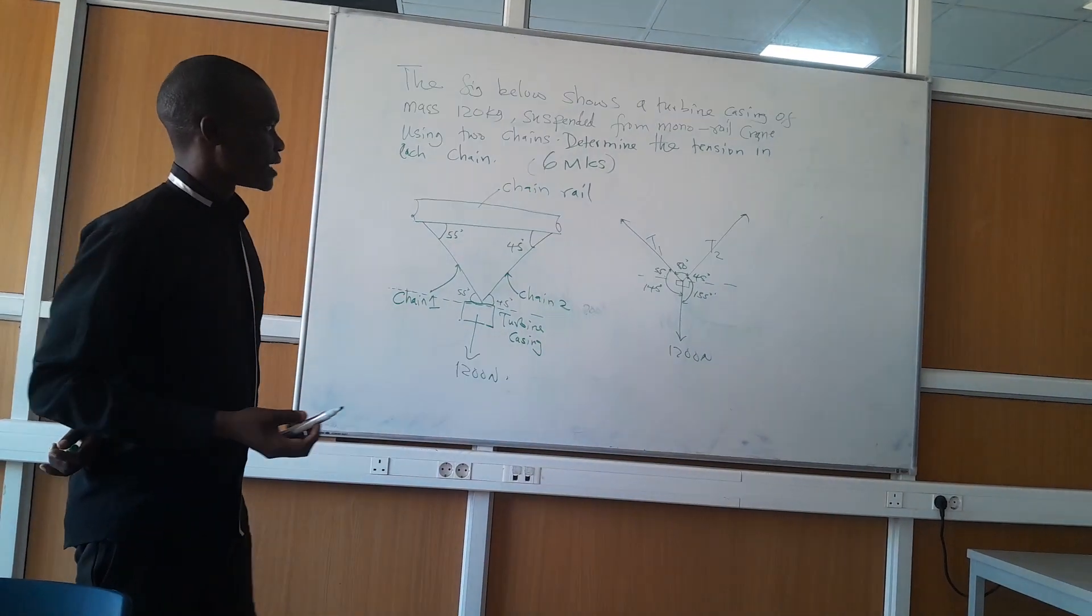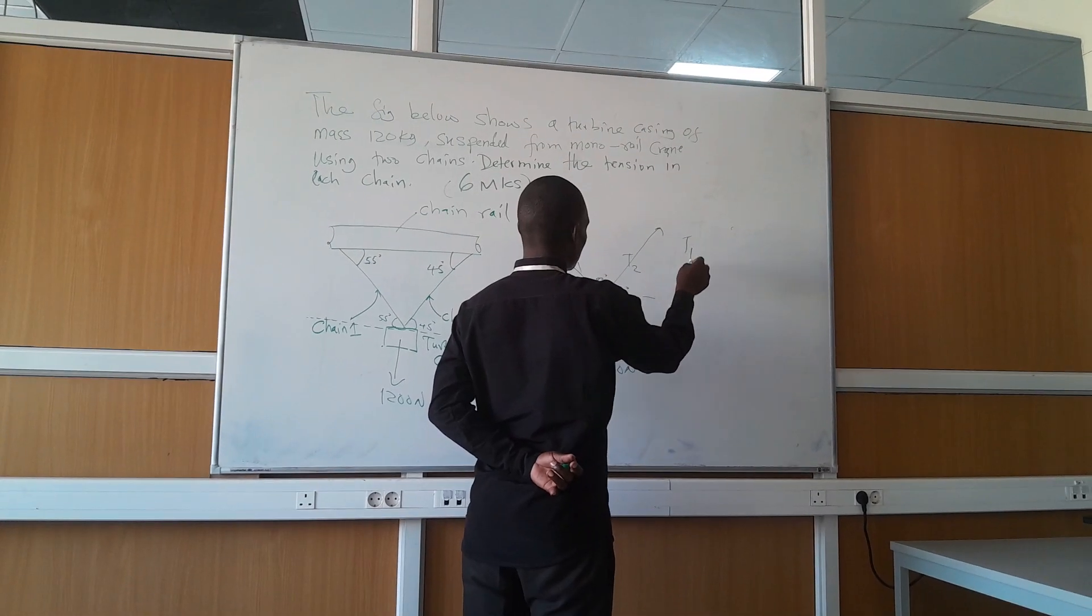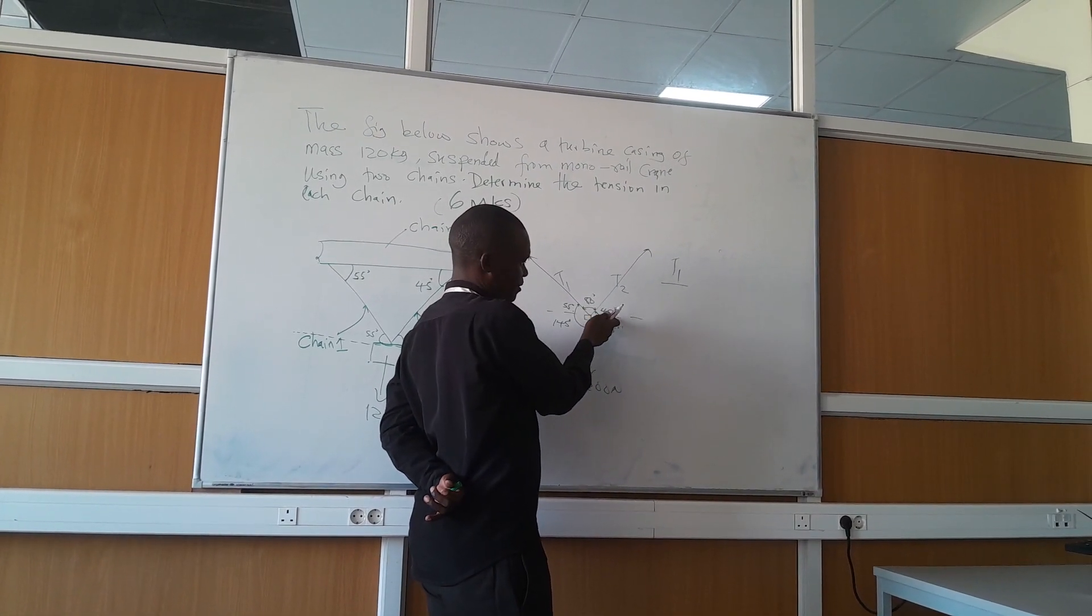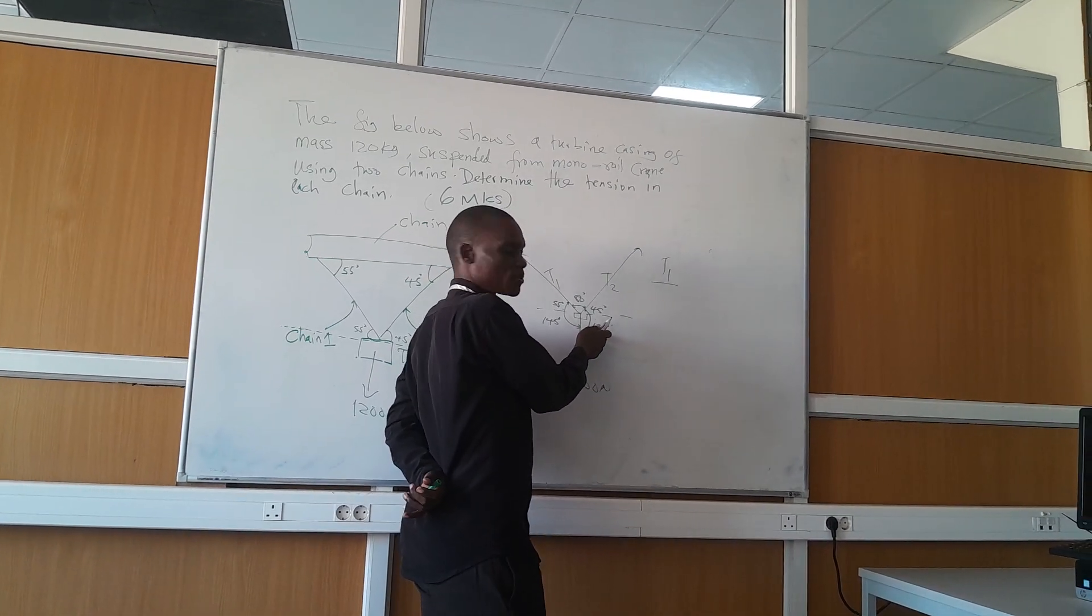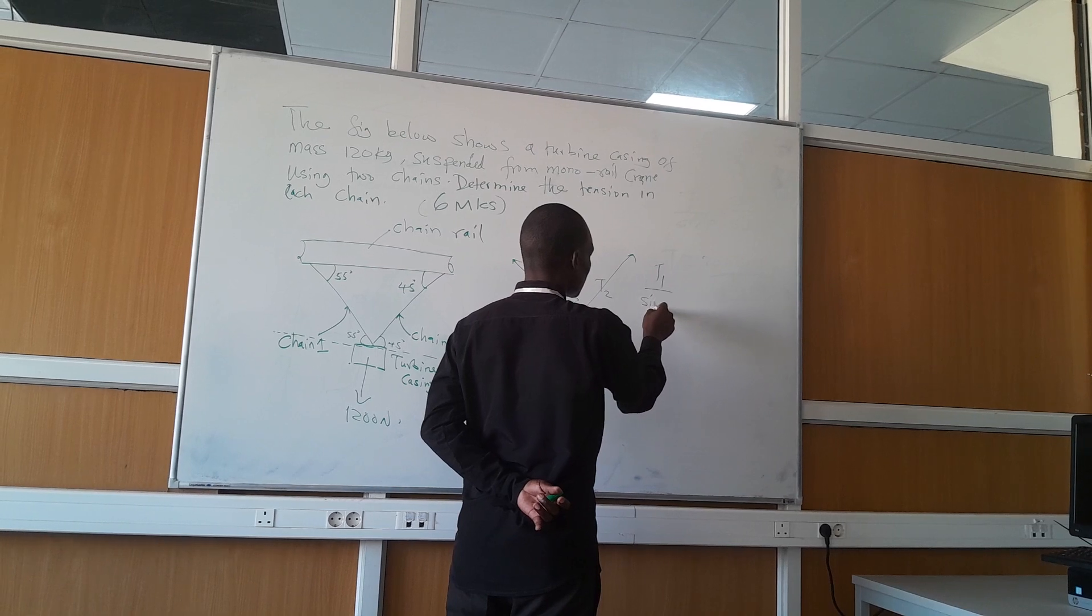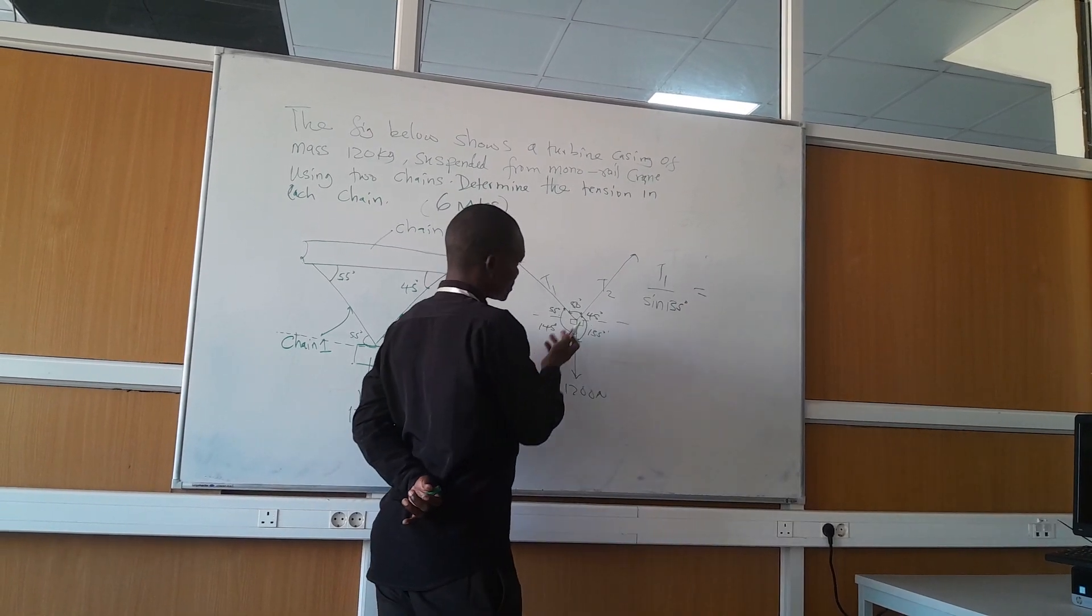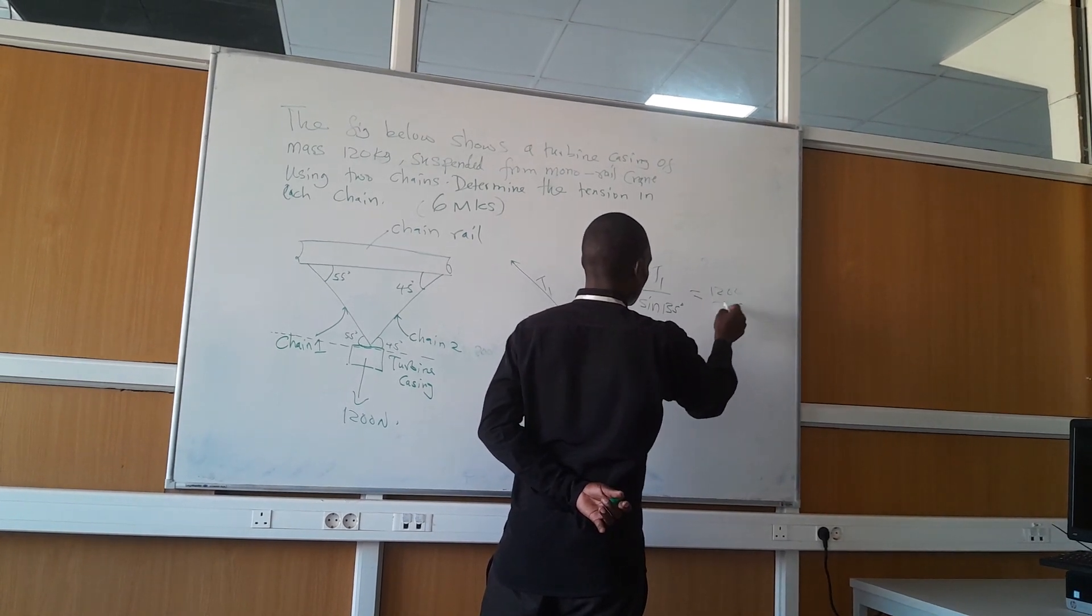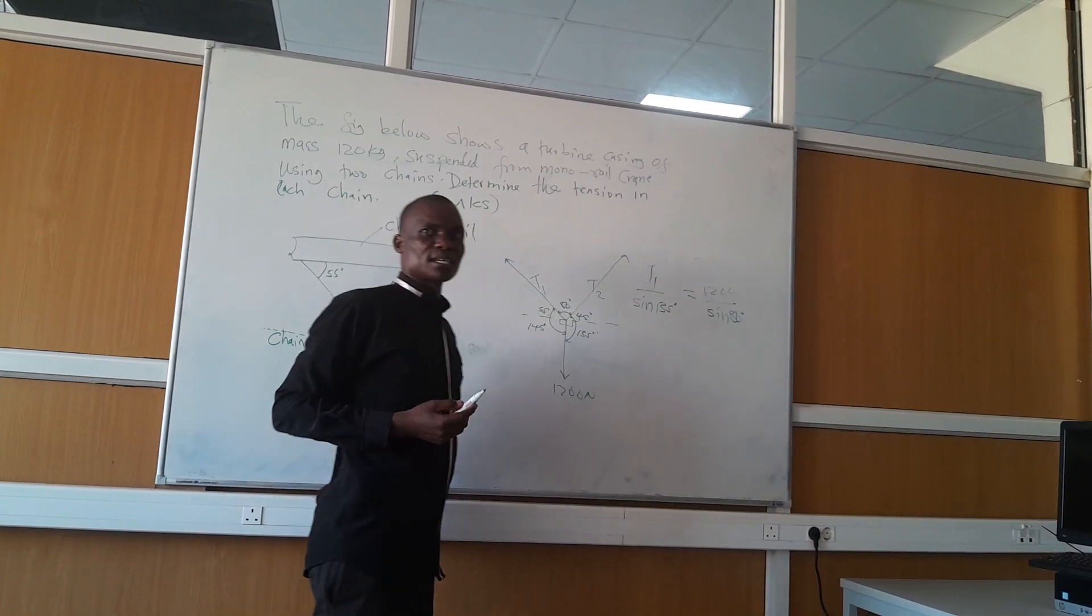T1 is proportional to the side opposite between the other two forces, which is sine 135. That is equal to 1200 over sine 80. This is how you will present yours.